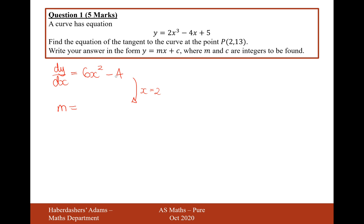So it's going to be 6 times 2 squared, that's going to be 4, 6 times 4 is 24, minus 4, that's going to be 20. So therefore, the y equals mx plus c graph is going to be y equals 20x plus c.